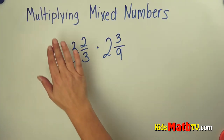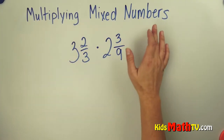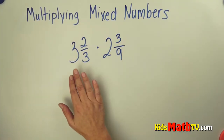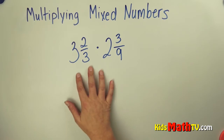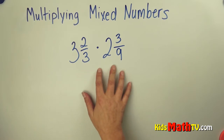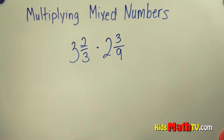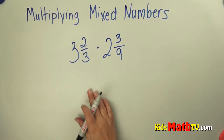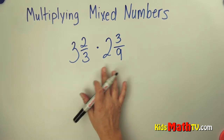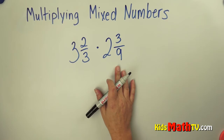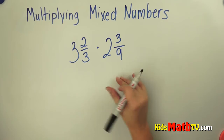In this lesson you will learn about multiplying mixed numbers. Here we have two mixed numbers that we're multiplying together. The first step is to make these mixed numbers into improper fractions.